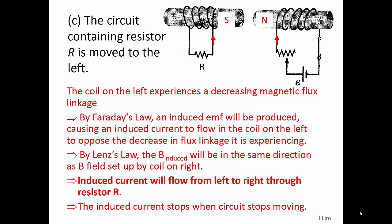The coil on the left experiences a decreasing magnetic flux linkage. By Faraday's law, an induced EMF will be produced, causing an induced current to flow in the coil on the left to oppose the decrease in flux linkage it is experiencing. By Lenz's law, the induced magnetic flux density will be in the same direction as the magnetic field set up by the coil on the right.